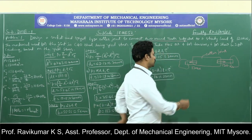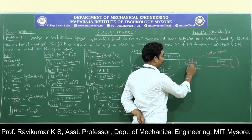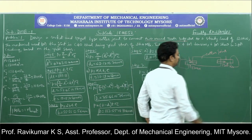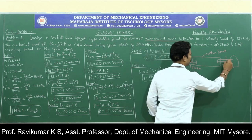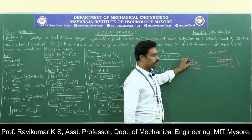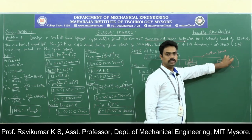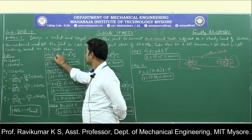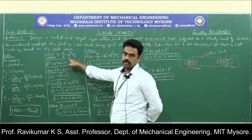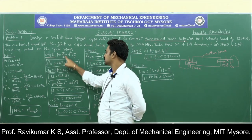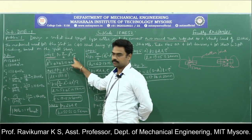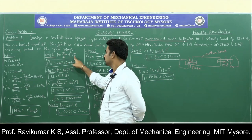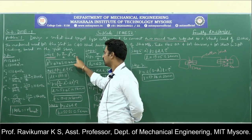The first and foremost thing is to determine the diameter of the rod, D. The first step is calculation of the rod diameter: P equals area into stress, that is π d² by 4 multiplied by the tensile stress.